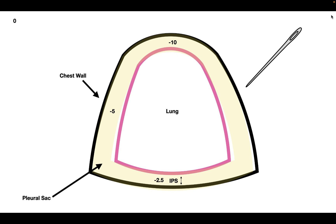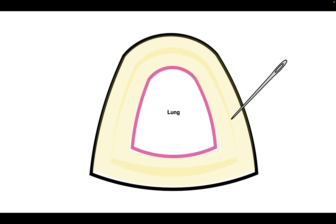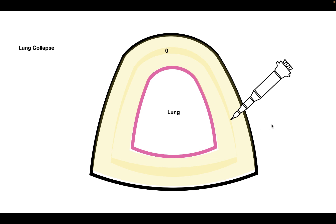Now let's say we take a huge needle and impale the person's chest cavity. When we do this, it causes air to rush into the pleural sac. When this occurs, the pressure inside the intrapleural space increases to zero — now equal to the pressure outside the person. Because of this increased pressure, the lungs collapse. So now what we're going to do is take the needle out and put in a chest tube, which will remove the air that flowed into the intrapleural space. We're going to see how much air we have to remove before the lungs start to fully inflate again.